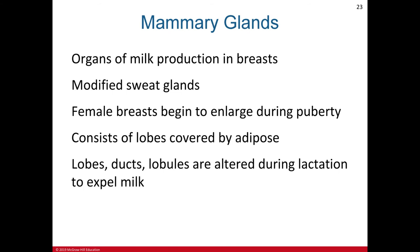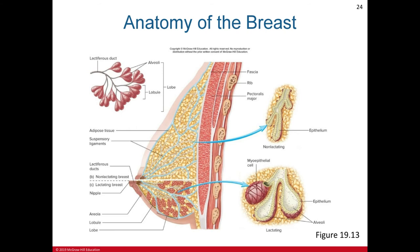The clitoris is a small erectile structure located in the vestibule, equivalent to the male penis. The vestibule is the space in which the vagina and urethra are located. The mammary gland is also part of the female reproductive system; it produces milk and is a modified sweat gland (a type of holocrine gland). Female breasts begin to enlarge during puberty and consist of lobes covered by adipose tissue.